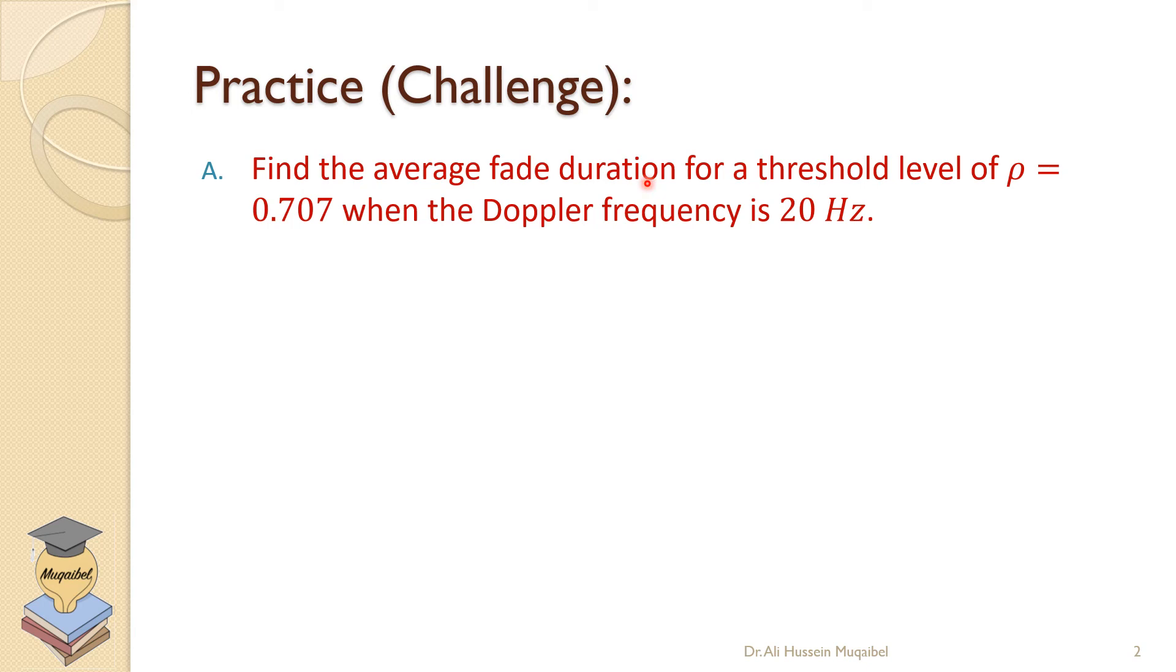Find the average fade duration for a threshold level of ρ = 0.707 when the Doppler frequency is 20 Hz. So this first question is asking about the average fade duration. You can add to that the level crossing rate.